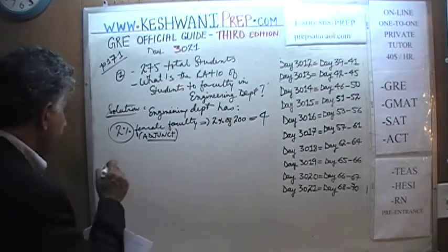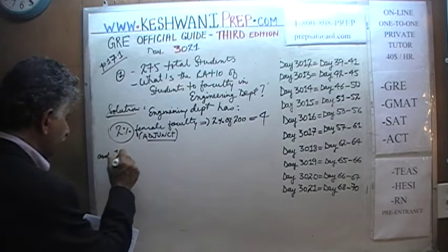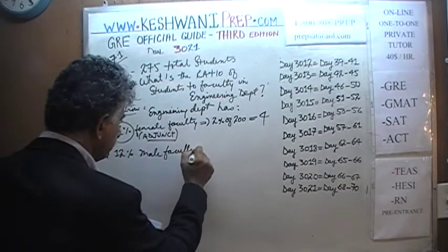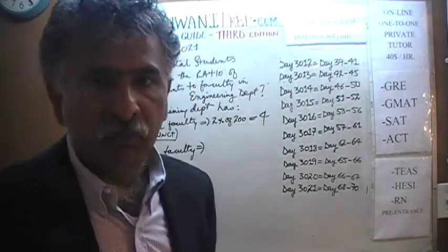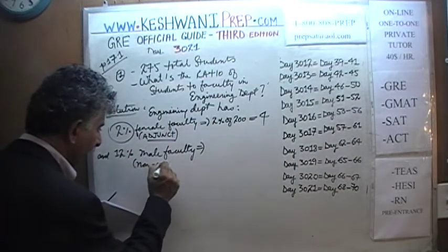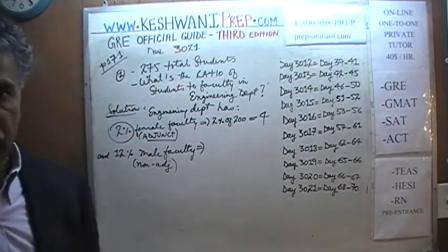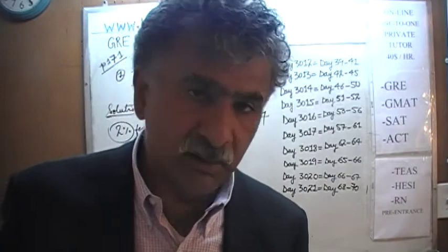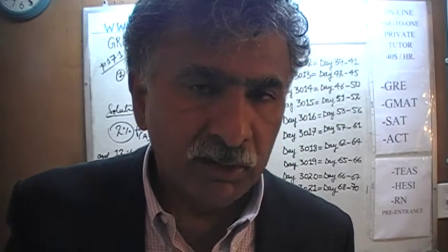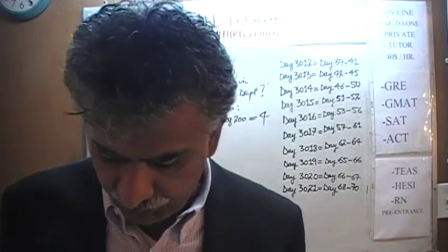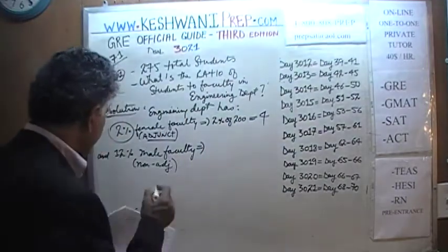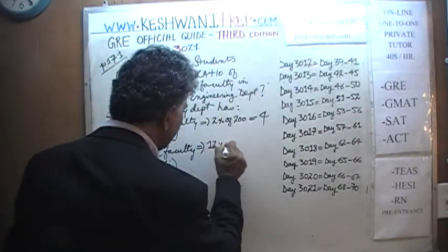Let's move on to the next part — I'm going to pick up speed. We are told that 12% of all the male faculty work in the engineering department. I'm calling them 'male' instead of 'non-adjunct,' which I find annoying to write. If you look at the top of the chart, there are 250 non-adjunct faculty — which we are calling male. So we have 12% of 250.